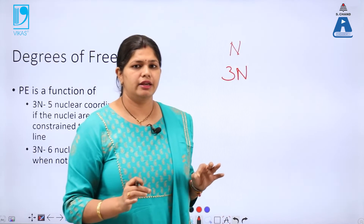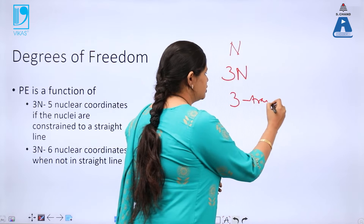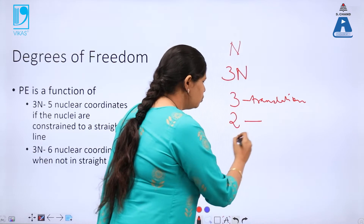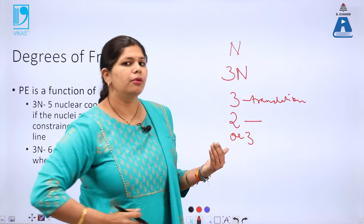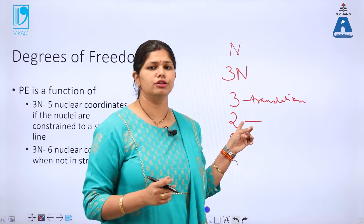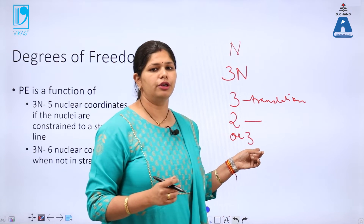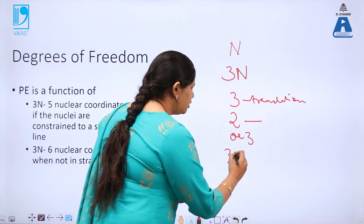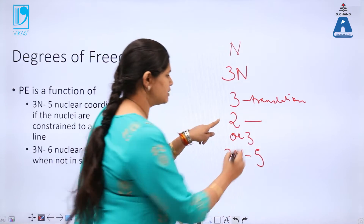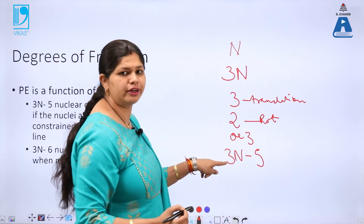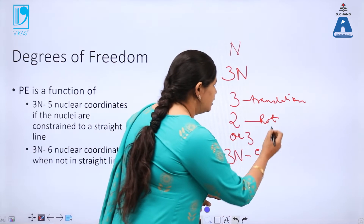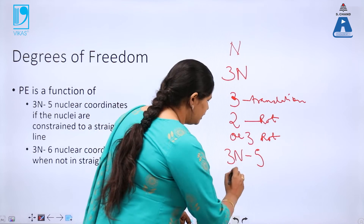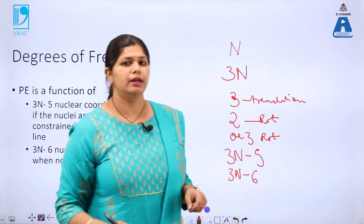Out of these 3n degrees of freedom, 3 are due to translational motion. For a linear molecule, there are 2 degrees of freedom of rotation; for a non-linear molecule, there are 3. So for a linear molecule, the vibrational degrees of freedom are 3n minus 5 (3 translational plus 2 rotational = 5). For a non-linear system with 3 rotational degrees of freedom, 3 plus 3 equals 6, so the vibrational degrees of freedom become 3n minus 6.